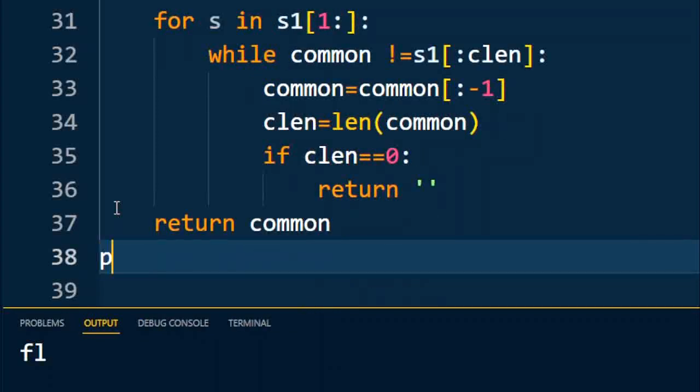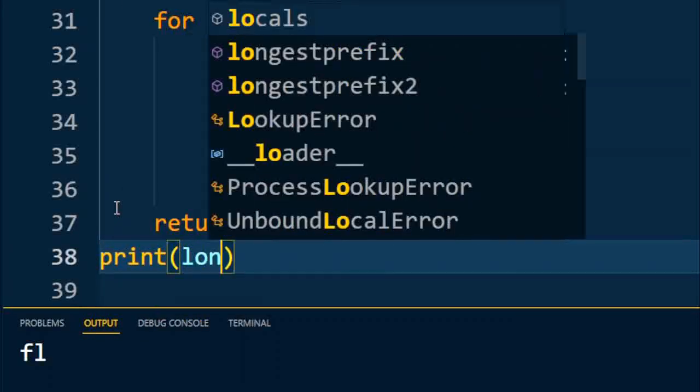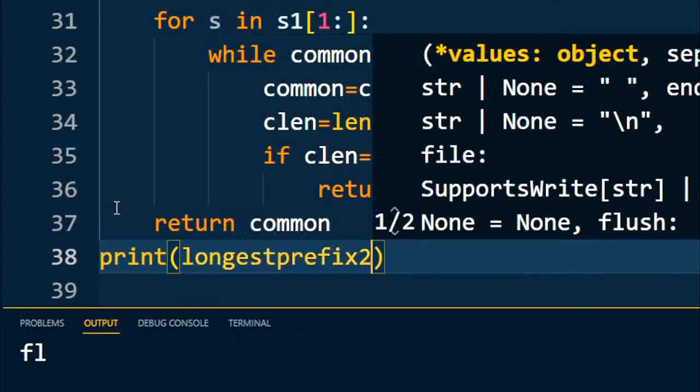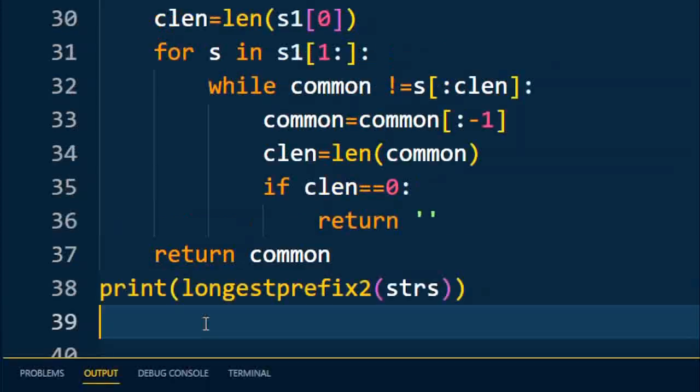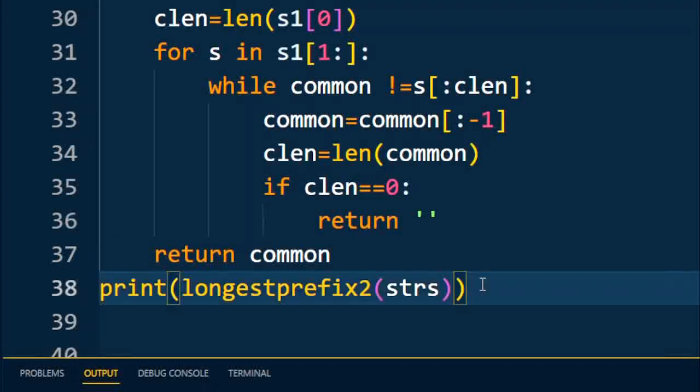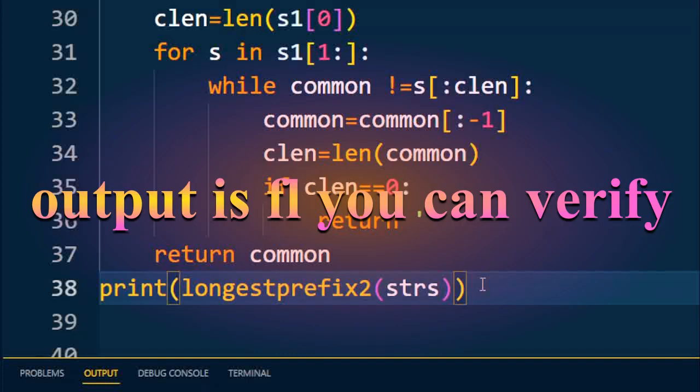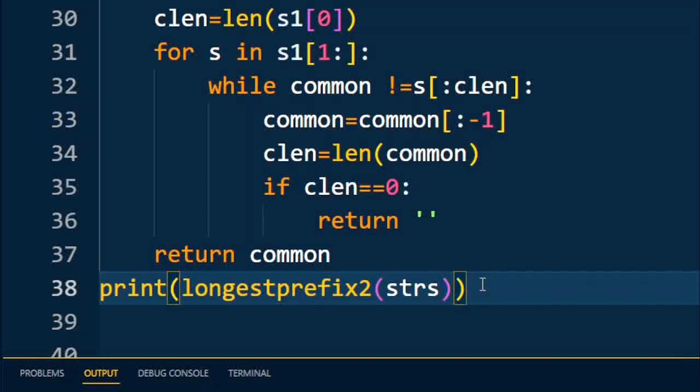After that I execute the code and it will get the output as 'fl'. So in this way we can find out the longest common prefix of any string in the array with the help of these two different approaches.